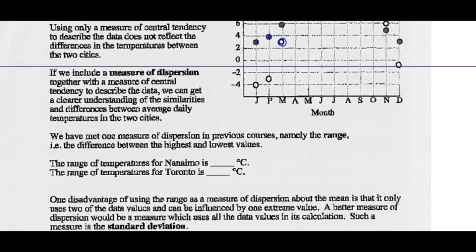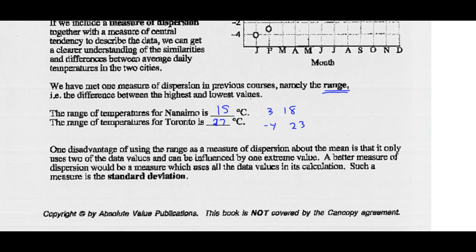We have met one measure of dispersion in previous courses — that's called the range, which is the difference between the highest and lowest values. The range of temperatures in Nanaimo: the lowest value is 3 and the highest is 18, so that's a range of 15. The lowest temperature in Toronto is negative 4 and the highest is 23, so that's a range of 27 degrees Celsius. One disadvantage of using the range is that it only uses two pieces of data — the extreme low and the extreme high. So a better measure of dispersion would use all the data values.